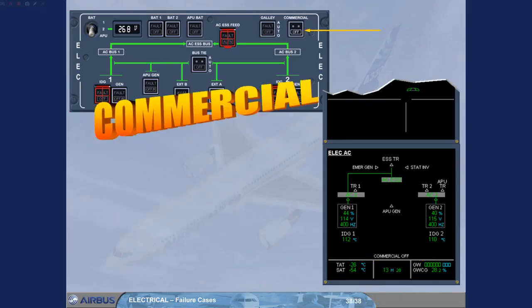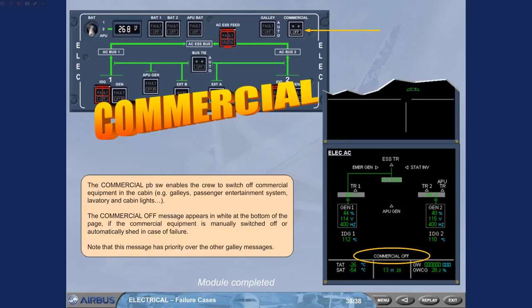The commercial push-button switch enables the crew to switch off commercial equipment in the cabin — for example, galleys, passenger entertainment system, lavatory, and cabin lights. The white 'commercial off' message appears at the bottom of the page if the commercial equipment is manually switched off or automatically shed in case of failure. Note that this message has priority over the other galley messages.